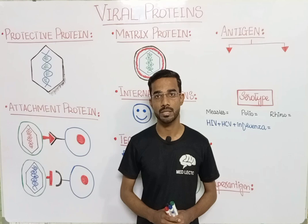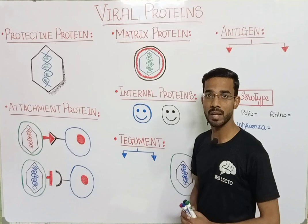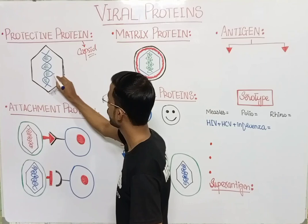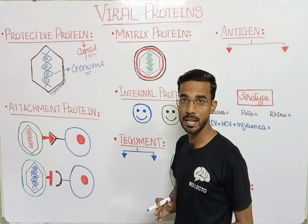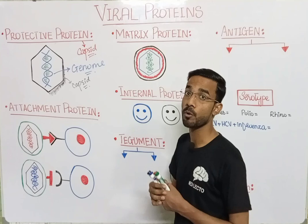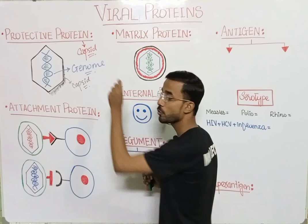The first protein is the protective protein, also called the capsid. This is the structure of the virus. In the center you will see the genome, which can either be DNA or RNA. That genome is actually protected by the capsid, which is made up of protein.